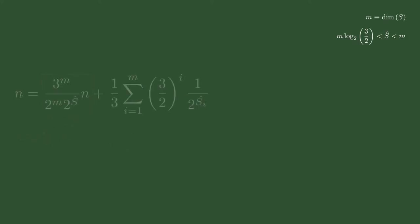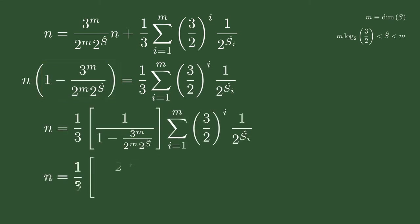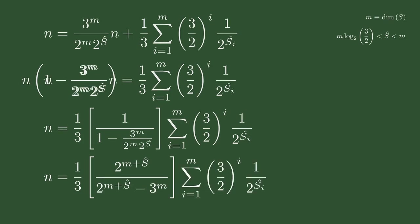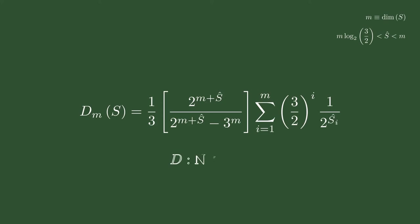With a little more algebra, we can isolate n. We can then replace n with a function in terms of S that we'll call D. D maps m-dimensional vectors of natural numbers to real values. Applying the bounds we've found for S-hat to D defines a solution space that would contain any closed-loop counterexamples to the conjecture.